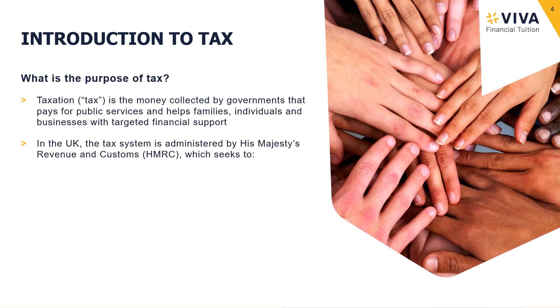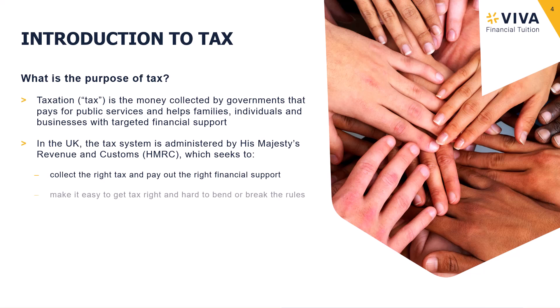HMRC have a number of stated aims. First, they want to collect the correct amount of tax from taxpayers and also pay out the correct amount of financial support to those who need it. The system is designed to make it as easy as possible for taxpayers to calculate and pay the correct amount of tax, but also to make it hard to bend or break the rules.